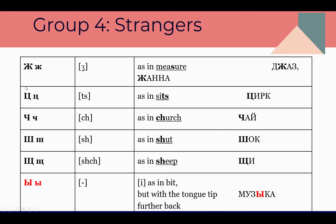Now moving to Ц — sounds like the 'ts' in 'sits.' Here is the word: Ц, И, Р, К — Цирк. And it translates as 'circus.'